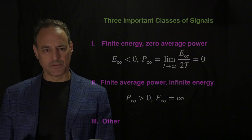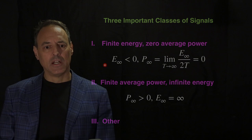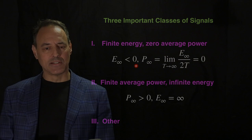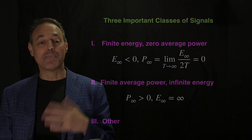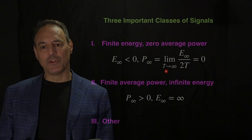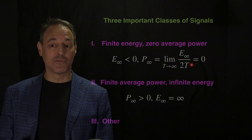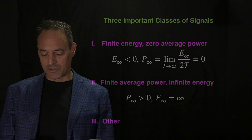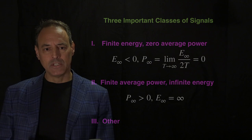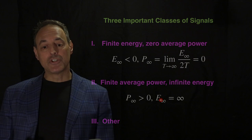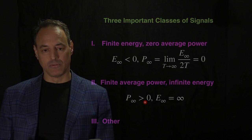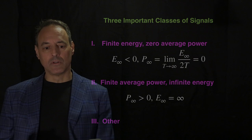There are three important classes of signals. One is where the total energy integrated is less than infinity — it's bounded. In this case, the total power becomes zero because a finite value divided as T goes to infinity goes to zero: zero average power but finite energy. Another type is where your energy integrated over all time is infinite, but your average power is some finite value. These are important classes of signals we're going to consider as we go forward in the class.